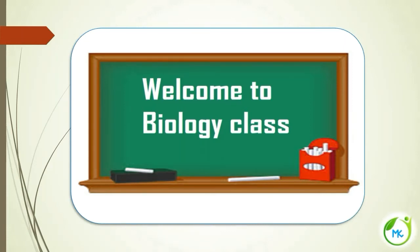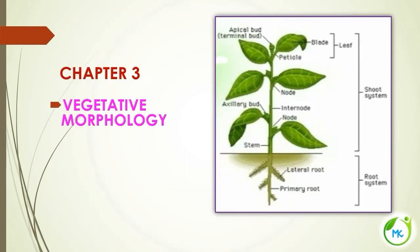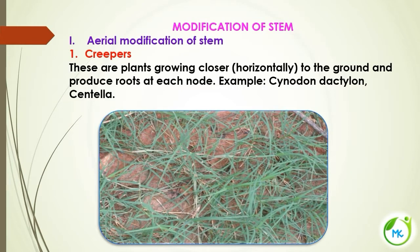Hello everyone, welcome to biology class. In this class we are going to see 11th standard botany, chapter 3, vegetative morphology. In vegetative morphology, we are going to see about the shoot system. In this part of the video, we are going to see about the modification of stem.